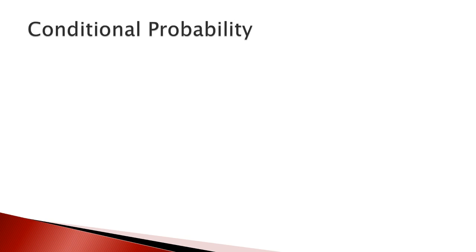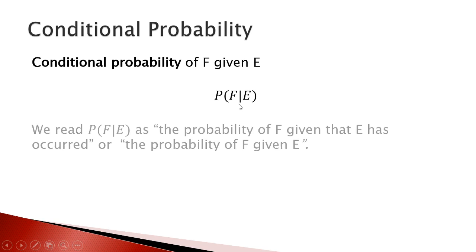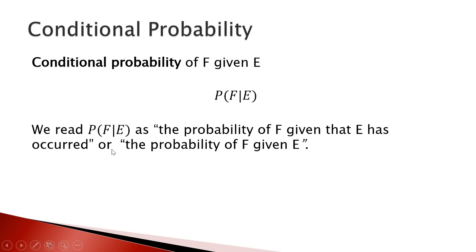First we talked about conditional probability. The conditional probability of F given E can be written like this, and we read it as the probability of F given that E has occurred, or the probability of F given E.